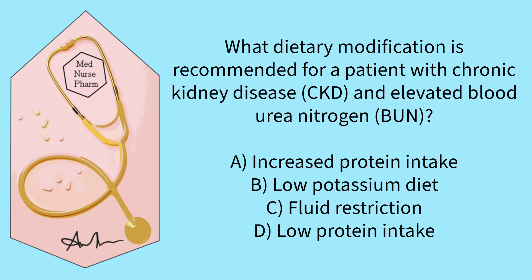A is incorrect. In CKD, a low protein intake is recommended to reduce the accumulation of nitrogenous waste products, not increased protein intake. B is incorrect. While managing electrolyte imbalances is crucial in CKD, elevated BUN is more directly addressed by reducing protein intake rather than adjusting potassium levels. C is incorrect. Fluid restriction is typically recommended in advanced stages of CKD to manage fluid overload, but it may not directly impact elevated BUN levels. D is correct. A low protein diet is recommended for patients with CKD and elevated BUN to reduce the workload on the kidneys and manage uremic symptoms.